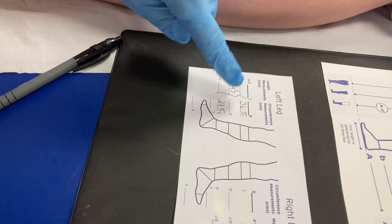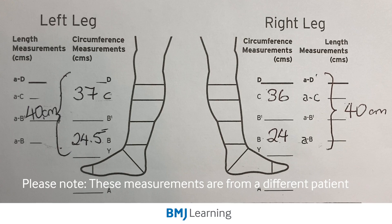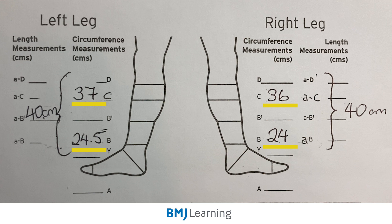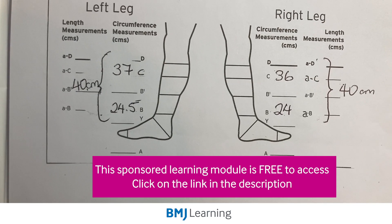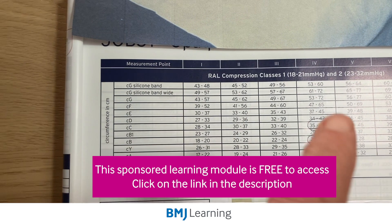By entering these measurements into the manufacturer's sizing books, we'll be able to determine the correct size of the garment required. Using the sizing graph, I've plotted the ankle measurement, the calf measurement, and the length of the leg from the base of the foot to just below the knee. Those measurements can then be plotted into the product guides.